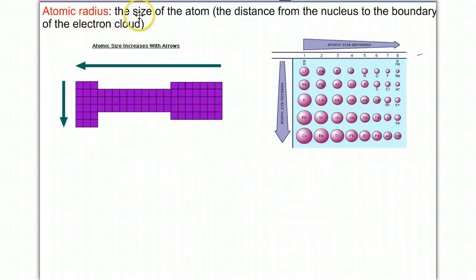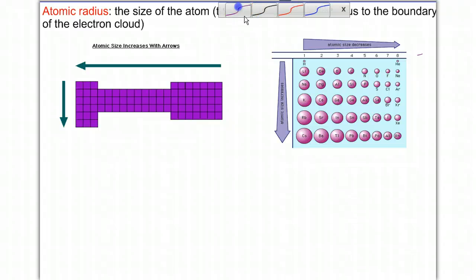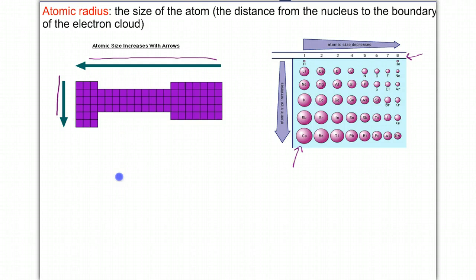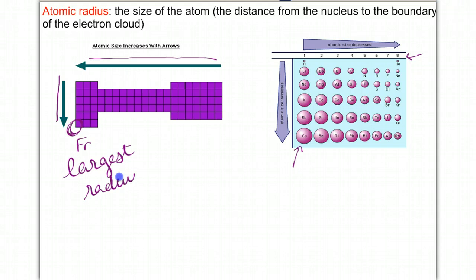The atomic radius is the size of an atom — the distance from the nucleus to the boundary of the electron cloud. For example, in this diagram, cesium has a much larger atomic radius than helium does. As you move down a group, the atomic radius gets larger, and as you move to the left of the periodic table, the atomic radius also gets larger. This makes francium the largest element on the periodic table.